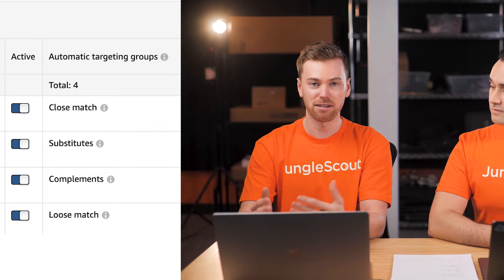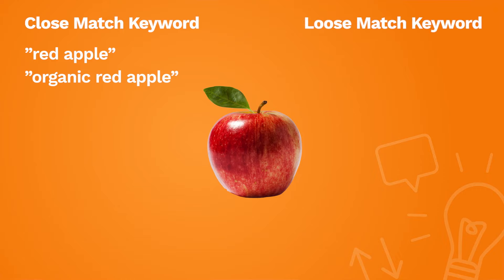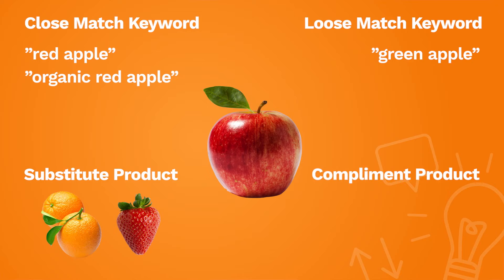To explain these targeting groups, let's pretend we're selling a red apple. A Close Match search term would be 'red apple' or 'organic red apple' — closely related to what we're selling. A Loose Match example would be a customer typing in 'green apple' — still an apple but different color, so loosely related. A Substitute would be if Amazon showed our ad on a product for an orange or strawberry — still a fruit but not exactly what we're selling. A Complement would be if Amazon showed our ad on a listing for caramel dip, since people pair apples and caramel at checkout.